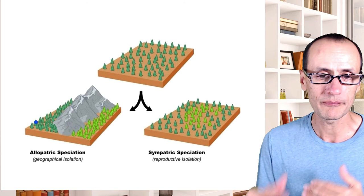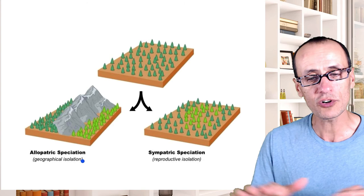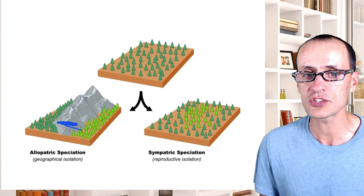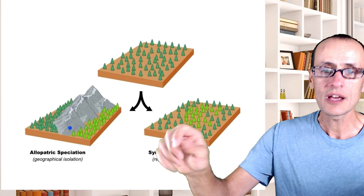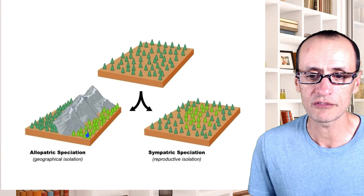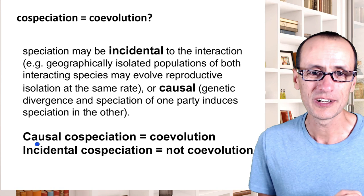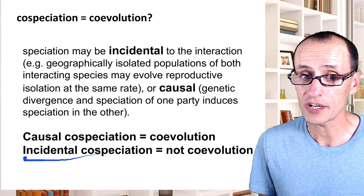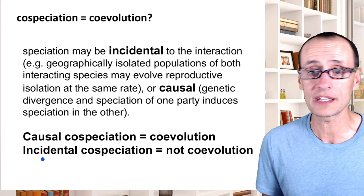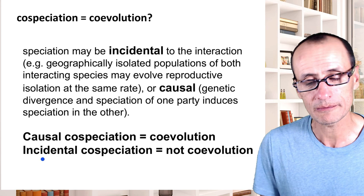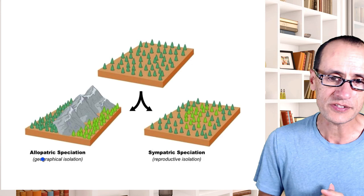This is the so-called allopatric model of speciation, where divergence happens because there's just lack of reproductive opportunities between two populations — given enough time, thousands or millions of years, they become reproductively incompatible, and that's when you get the evolution of new species. For co-evolution to happen, there needs to be causality — causal co-speciation, not incidental co-speciation. The challenge of studying these macro-level patterns is that causality is very difficult to suss out.